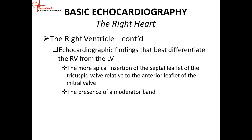What are the echocardiographic findings that best differentiate the RV from the LV? You have to know this — it comes in all exams, and you need to know it clinically because patients may have transposition of the great vessels or other congenital abnormalities. The more apical insertion of the septal leaflet of the tricuspid valve relative to the anterior leaflet of the mitral valve identifies that you're dealing with the right ventricle. Also, the presence of the moderator band.